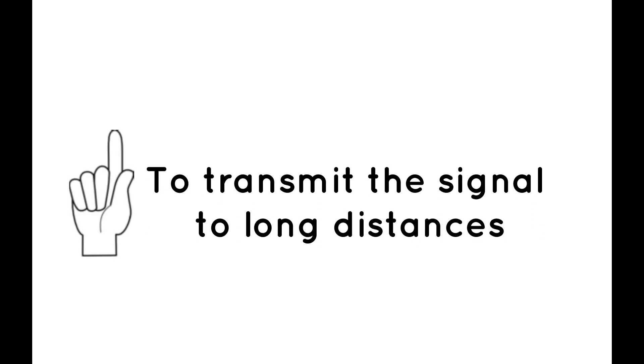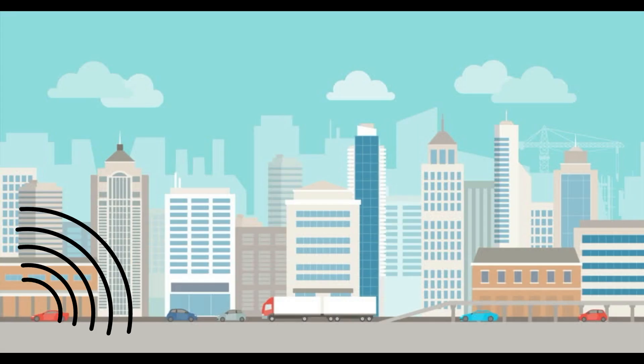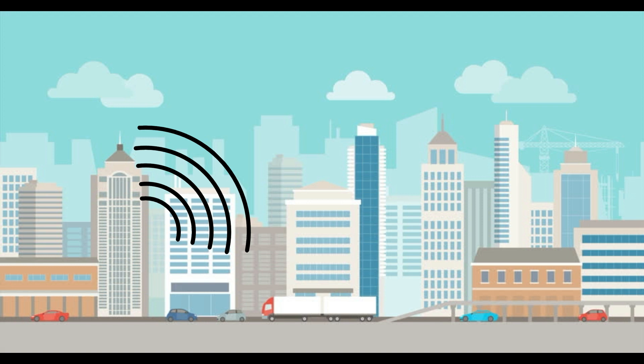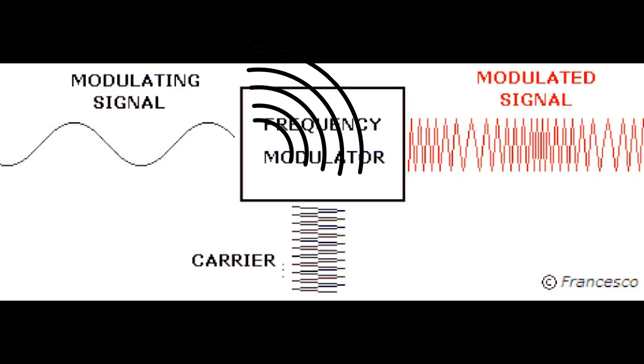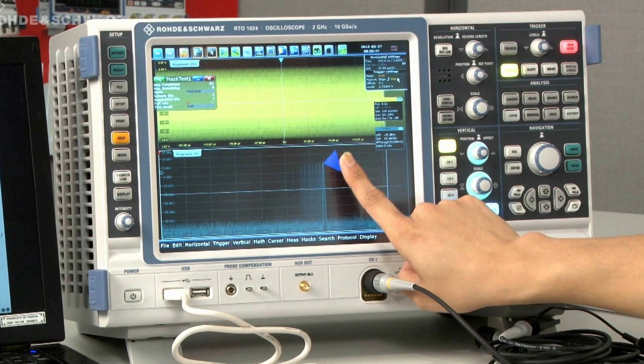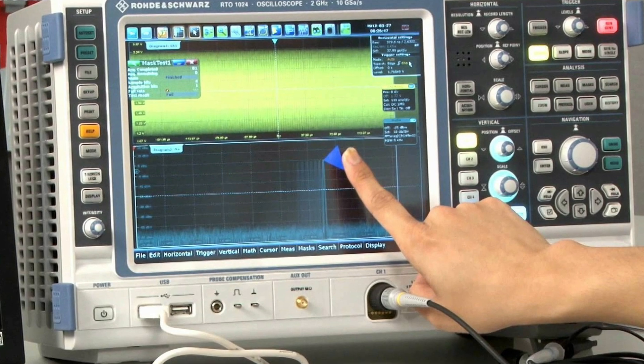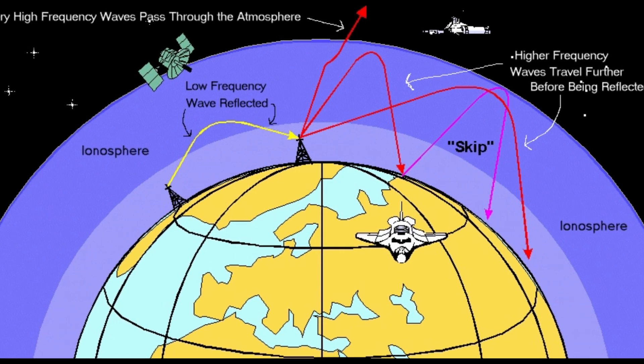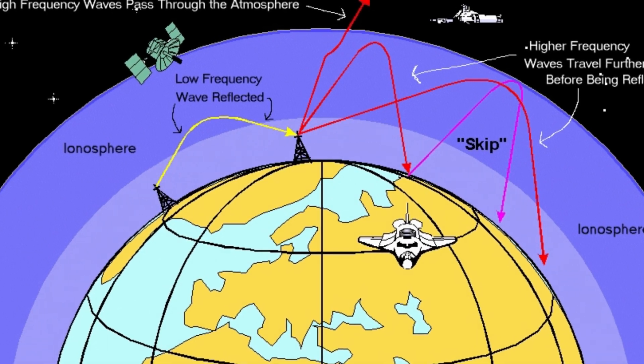Let's take a look at the three main advantages of modulation. Number 1: To transmit the signal to long distances. Low frequency signals like audio or any other signals are incapable of propagating to long distance on their own. When modulating them with a high frequency carrier signal, the modulated output will obtain high frequency characteristics and as a result, it can propagate longer and in turn provides more range to the user.